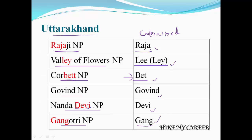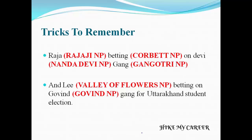Now let's see about the story. The story has two main characters: Raja and Lee. Raja means Rajaji National Park, and Lee means Valley of Flowers National Park. Raja and Lee are the two main characters in this story.